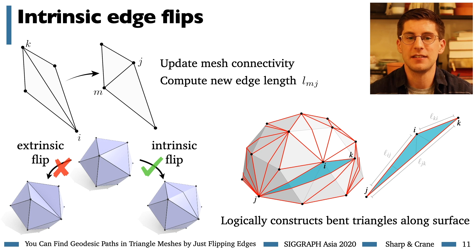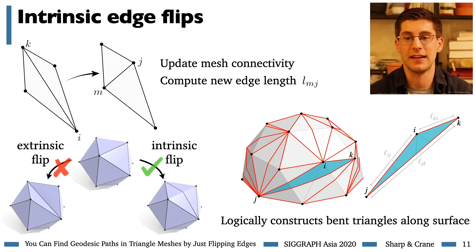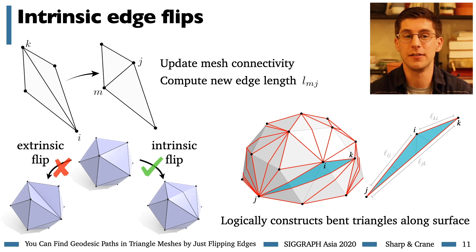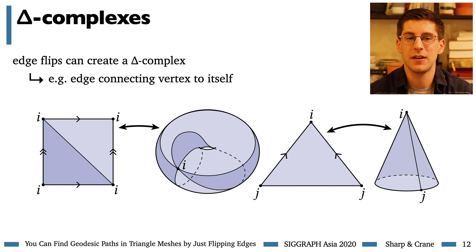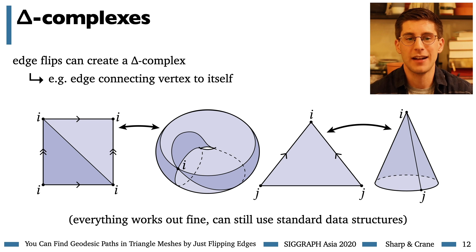As we flip many edges, we implicitly construct long bent triangles along the surface, but we never need to explicitly represent how these triangles lay across the surface. The representation is always just a fixed amount of data per edge, and the core edge flip is a simple constant-time operation. In the past, these edge flips have been used almost exclusively to find special Delaunay triangulations, but here we use them for something totally unrelated to the Delaunay property. Note also that edge flips can create what's called a delta complex — for instance, an edge connecting a vertex to itself — but in practice this won't affect our algorithm, and we can still use standard data structures like half-edge meshes.